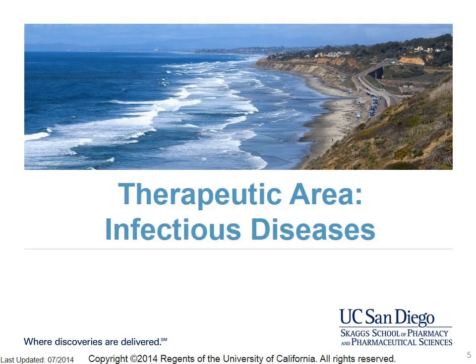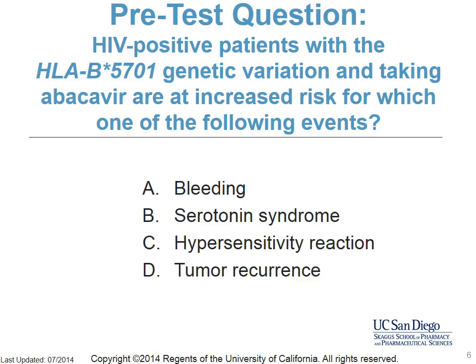The first example of pharmacogenomic testing is from the area of infectious disease. This is the pretest question. The question will be repeated later as a post-test question, and the answer will then be provided.